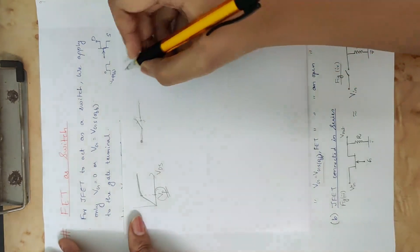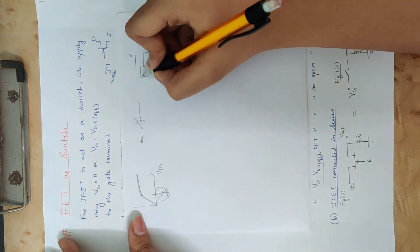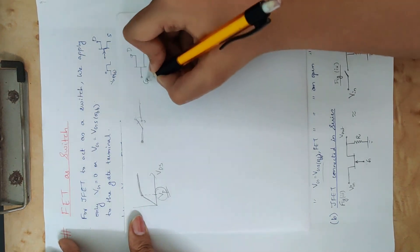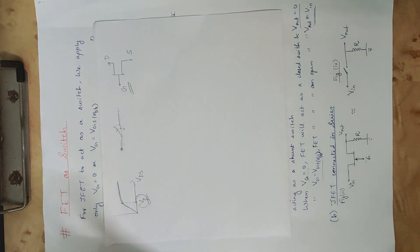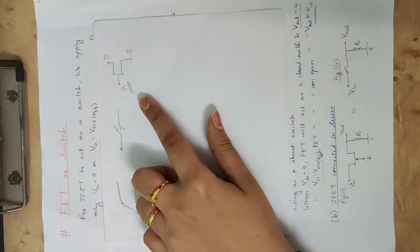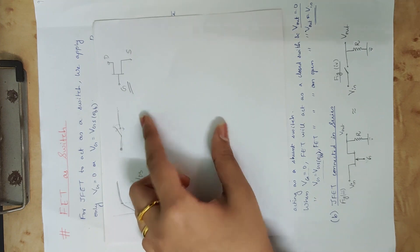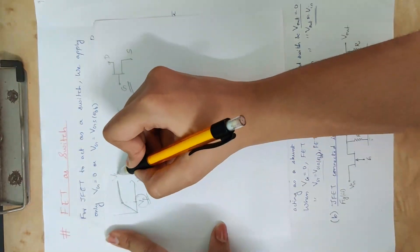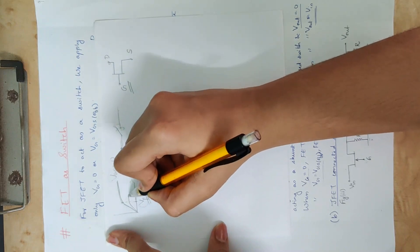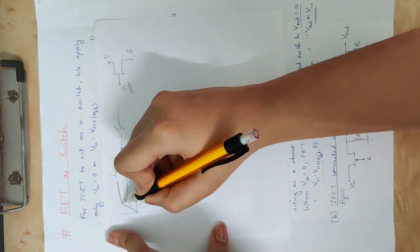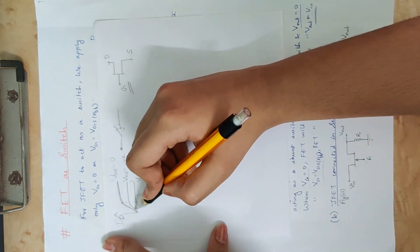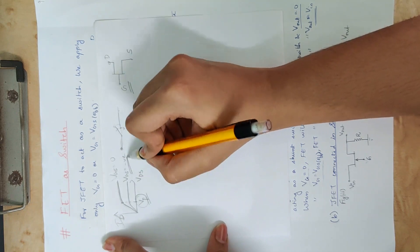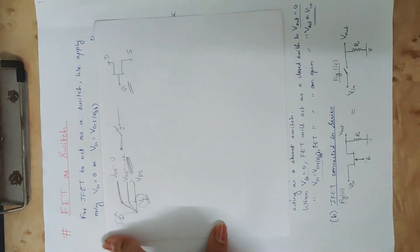If you want to use a J-FET as a switch, you can control the drain current or drain resistance by applying voltage to the gate. When VGS equals 0, drain resistance is small. When VGS is a negative value, resistance approaches 0.